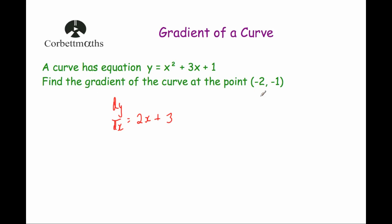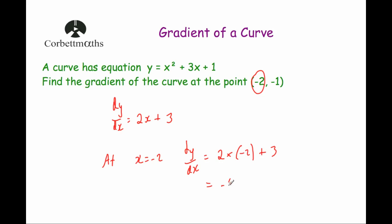To find the gradient of the curve at the point (−2, −1), we substitute in the x-coordinate, which is −2. At x equals −2, dy by dx equals 2 times −2 plus 3, which is −4 plus 3, equal to −1. So the gradient of the curve at the point (−2, −1) is equal to −1. That would also be the same as the gradient of the tangent at that point.